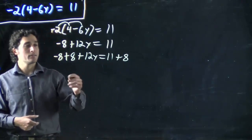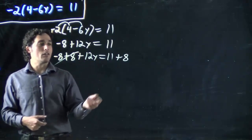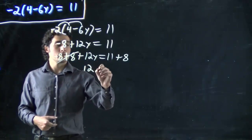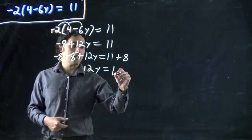As always, both sides. These will cancel. 12y equals 11 plus 8, or in other words, 19.